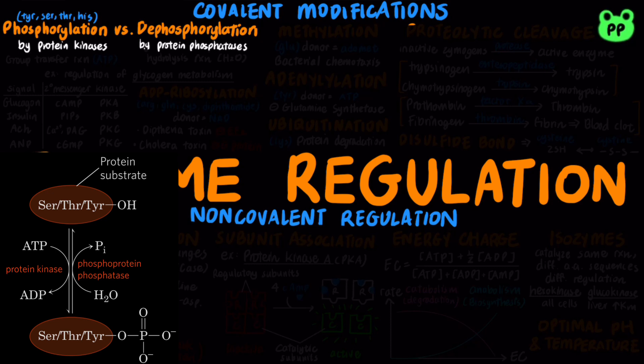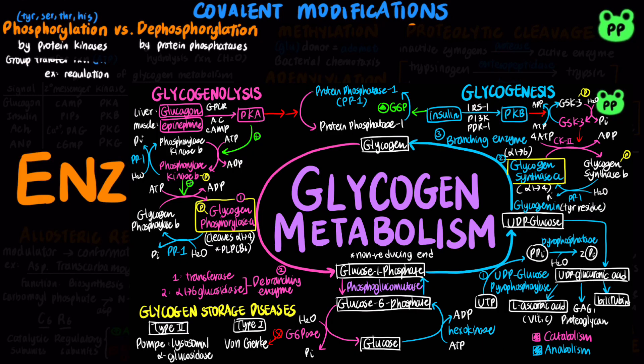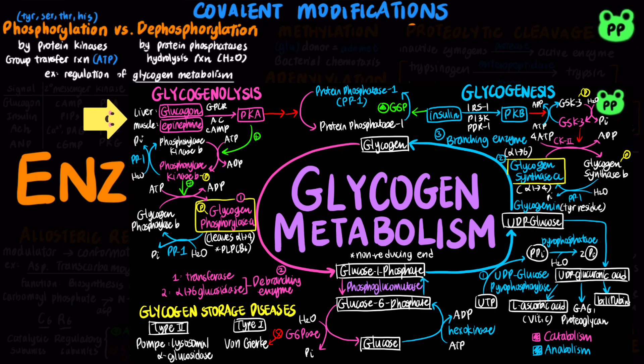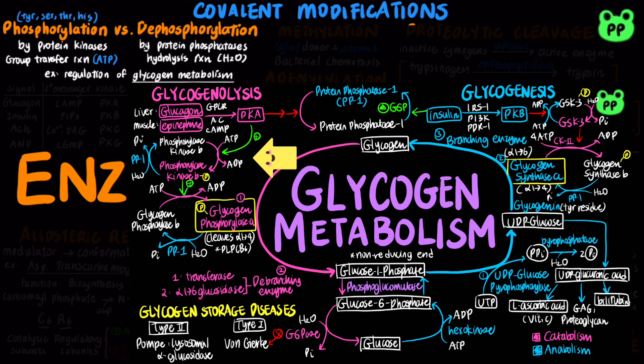For example, in the regulation of glycogen metabolism, glucagon and epinephrine promote glycogen breakdown through double positive phosphorylation. Glucagon activates protein kinase A, which phosphorylates and activates phosphorylase kinase B, which in turn phosphorylates and activates glycogen phosphorylase that is responsible for glycogen degradation.